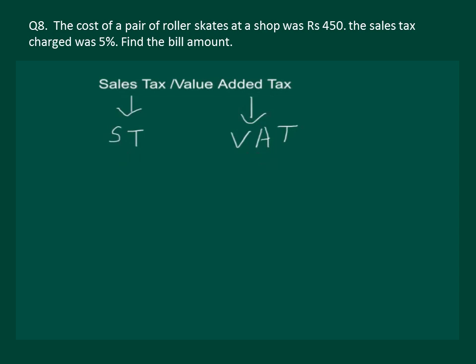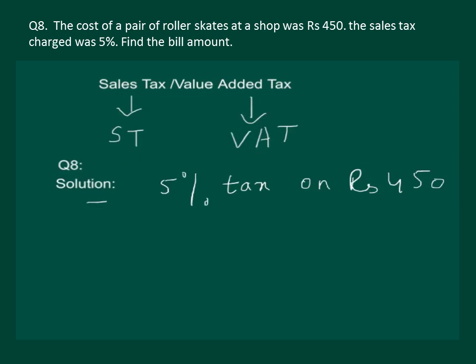Let's take up one example to understand sales tax. Please read the question on the slide. The cost of a pair of roller skates at a shop was Rs. 450. The sales tax charged was 5%. We need to find the billing amount. Clearly, 5% tax has to be paid on Rs. 450. So let's calculate the tax: it is 5% of Rs. 450, that is 5 by 100 into 450.